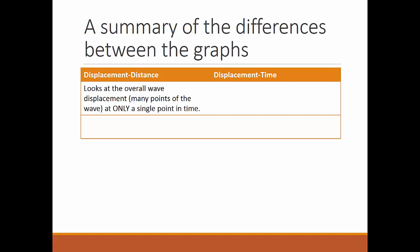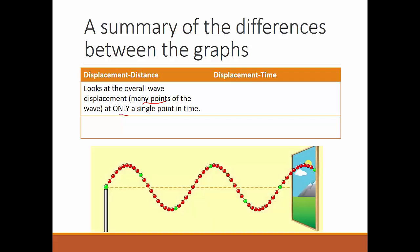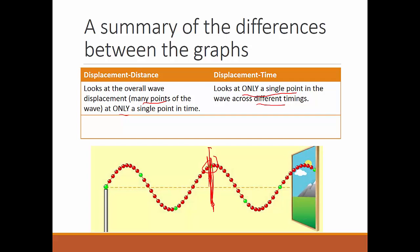In summary: for displacement-distance, you look at the overall wave displacement at many points of the wave, but only a single point in time — like a snapshot. For displacement-time, you look at only a single point, but across many different timings — how that green dot moves up and down. So displacement-distance covers many points in the wave at a single moment in time, while displacement-time covers a single point in the wave across many moments in time.